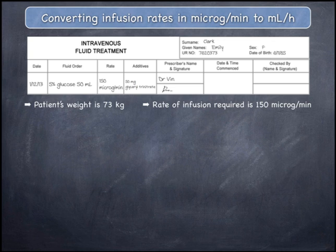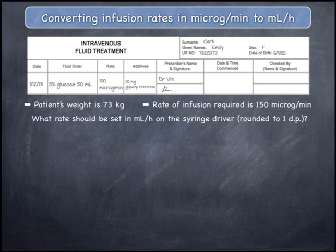The order displayed shows that a patient has been ordered glycerol trinitrate, 50 milligrams in 50 mils of 5% glucose, to infuse at 150 micrograms per minute. The case notes, which are not displayed on the screen, tell you that the patient's weight is 73 kilograms. What rate of infusion in mils per hour should be administered via the syringe driver, rounding to one decimal place?